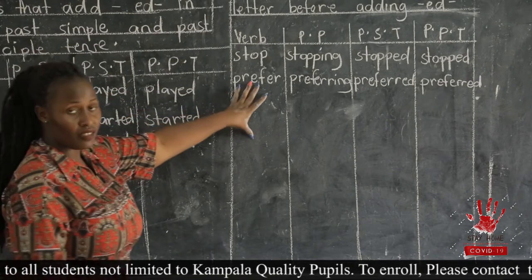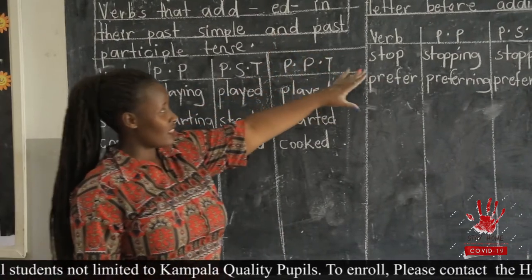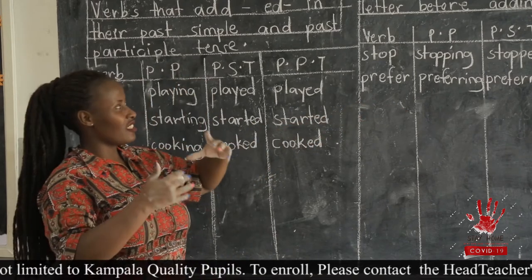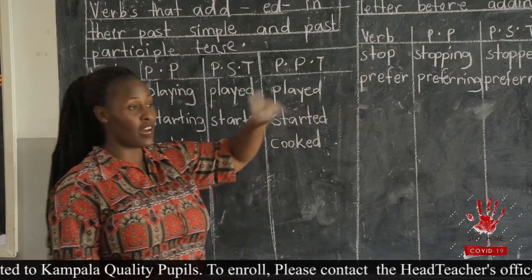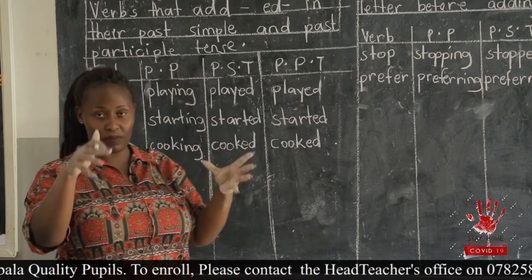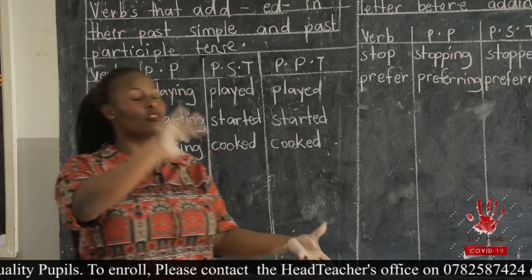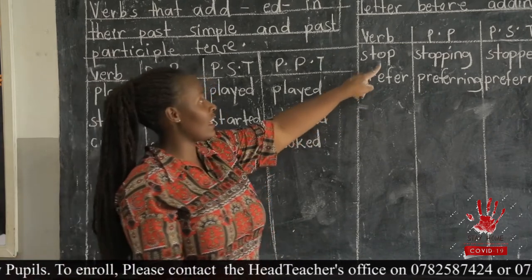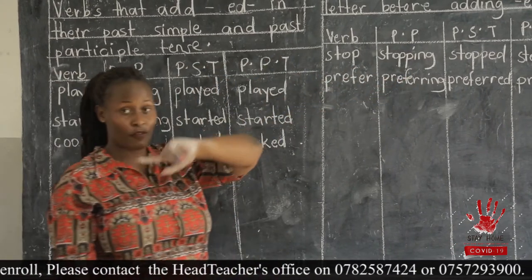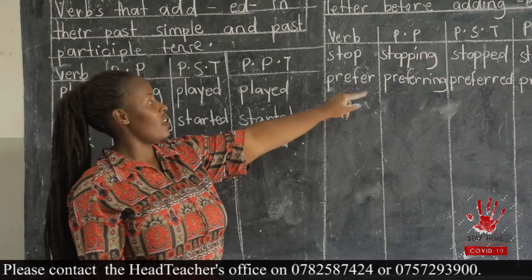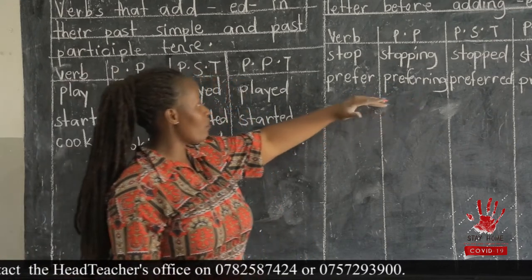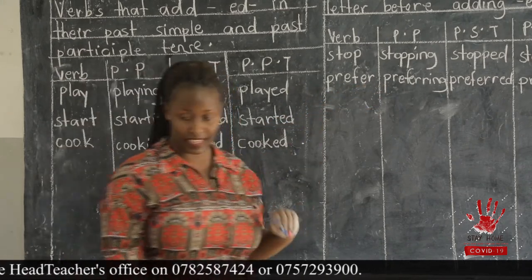The rule that governs this is that these words have a stressed syllable at the end — a syllable that carries stress. For example, in the word 'stop,' we have the syllable 'op' — a vowel and a consonant. A syllable is a combination of a vowel sound and a consonant sound. That is why we double the last letter to form a meaningful word. Similarly, in 'prefer,' the stressed syllable is 'er,' so we must double the last letter.